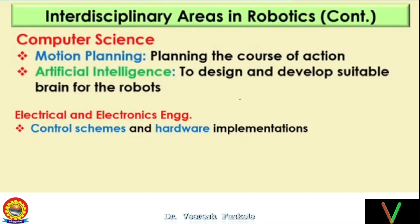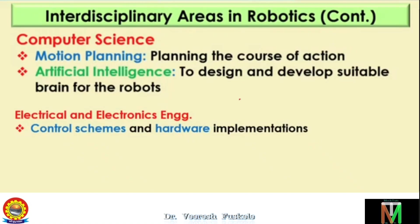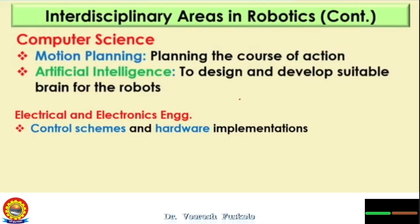Next is artificial intelligence, which comes into decision-making. We want to develop a suitable brain for the robot so that it can make decisions on its own and adjust to changing circumstances. For example, computer vision has applications like alerting a drowsy driver or guiding robots moving on roads. Computer science is very important because robots have moved from industrial robots to social robots, and the algorithms and architecture involved are critical.